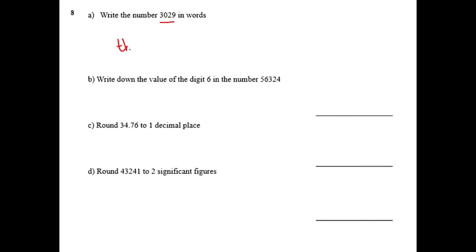So this is 3000, and there are 0 hundreds, so it's just 3029. So you just read the number 3029 and write that down in words.